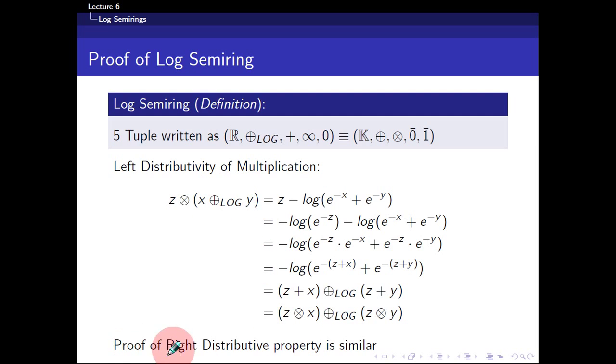So then, the proof of the right distributive property is also similar. The smart way to do this is to notice that the addition, the classical addition, which is the multiplication in this semi-ring, is actually commutative, which means you can flip.